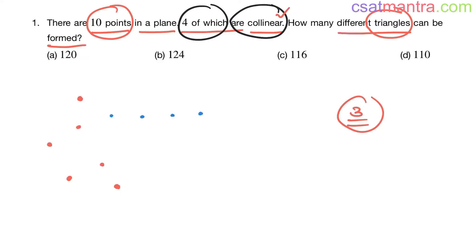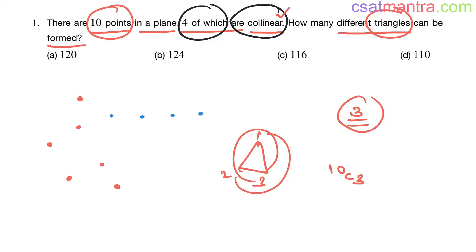We have 10 points in a plane. To draw a triangle you need three points — how many ways can you select them? It's 10C3. This is a selection problem, not arrangement, so it's combination. Selecting points in any order gives the same triangle, so it's 10C3 total triangles — but four of those points are collinear.